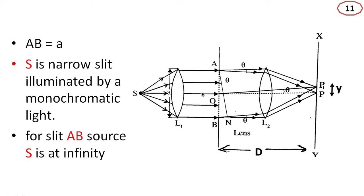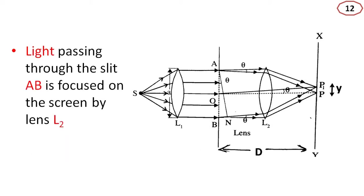The source is at infinity. That is, for the slit AB, source S is at infinity. Light passing through the slit AB is focused on the screen by a lens L2.